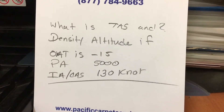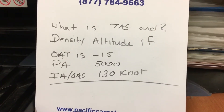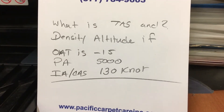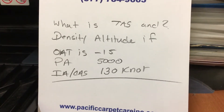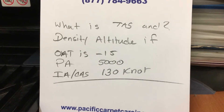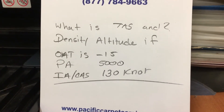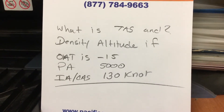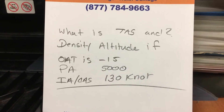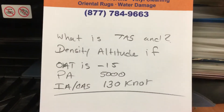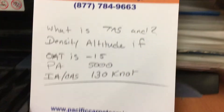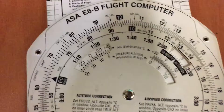The question is: what is true airspeed and what is density altitude if outside air temperature is minus 15, pressure altitude is 5,000 feet, and indicated airspeed (calibrated airspeed) is 130 knots? To solve this, we're going to use the E6B computer — it's very easy.